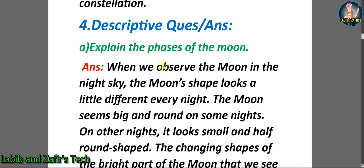Now students let's go through some descriptive question answers. Number A: Explain the phases of the moon. Answer: When we observe the moon in the night sky, the moon's shape looks a little different every night.